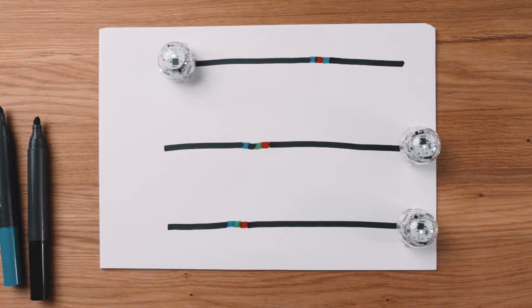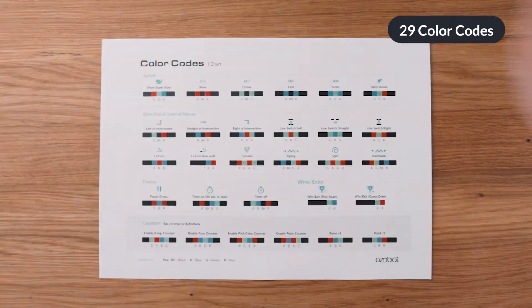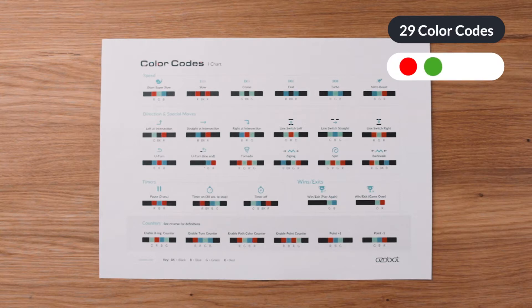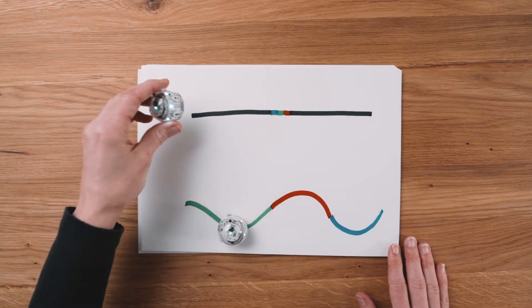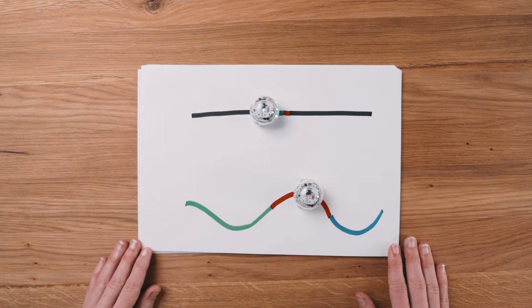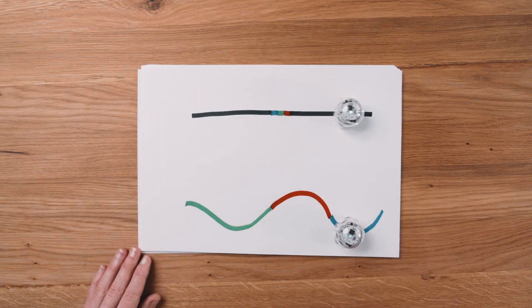Ozobot's color code language consists of 29 color codes made with combinations of red, green, black, and blue. Evo can follow any line no matter the color, but your color codes must be on black lines.